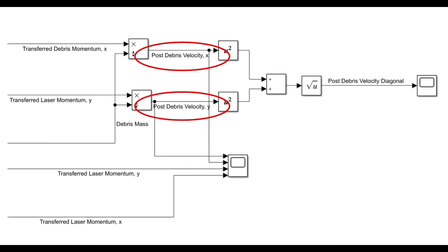Then, to find the debris velocity, we just divide the debris momentum by the debris mass to get the velocity in each direction. Finally, we can use Pythagorean's theorem to find the debris velocity in the diagonal direction after getting hit by a laser pulse.